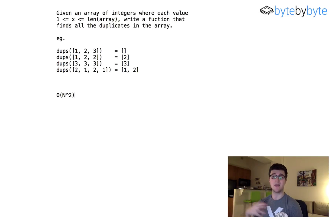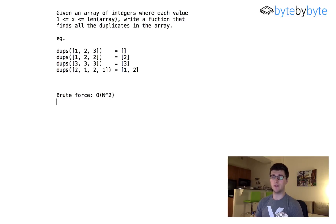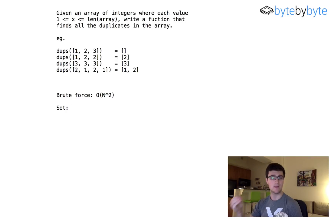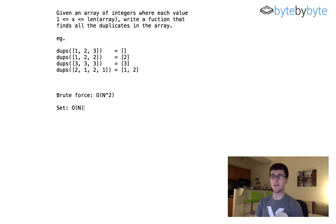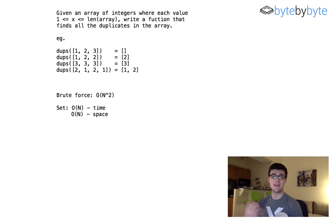It is the brute force solution, and hopefully it's also obvious that we can optimize this a bit. One option: as we're iterating through the array, we could add everything into a set. As we see an item, we add it to the set, and every time we see a new item we check the set to see if it's already in there — if it is, we know it's a duplicate. That's going to take O(n) time because we only have to iterate through the array once. But it's also going to take O(n) space because we have to store up to every element in the array in our set.